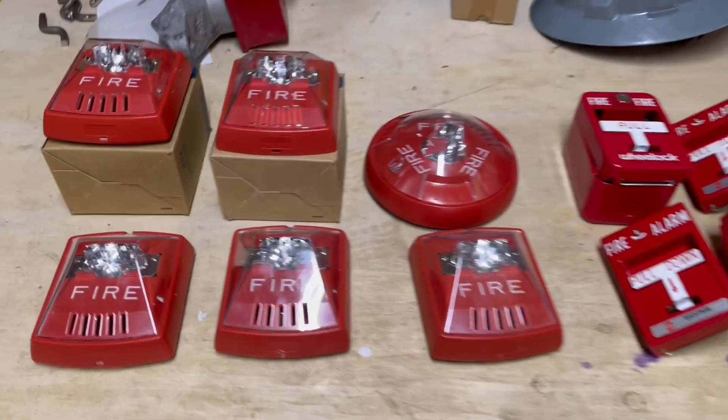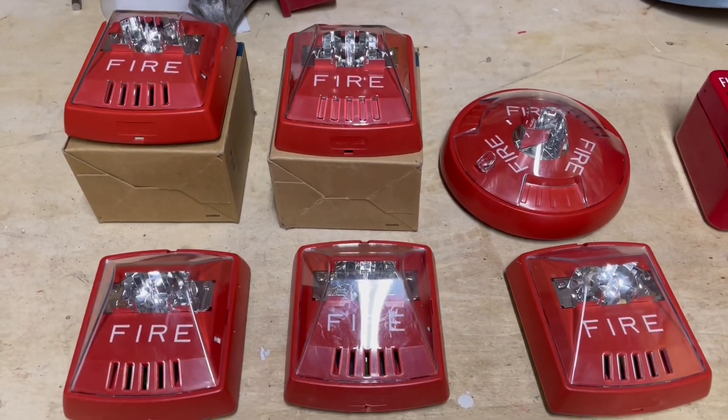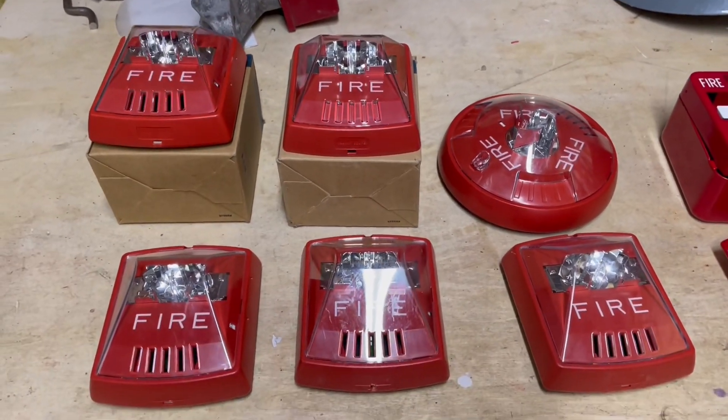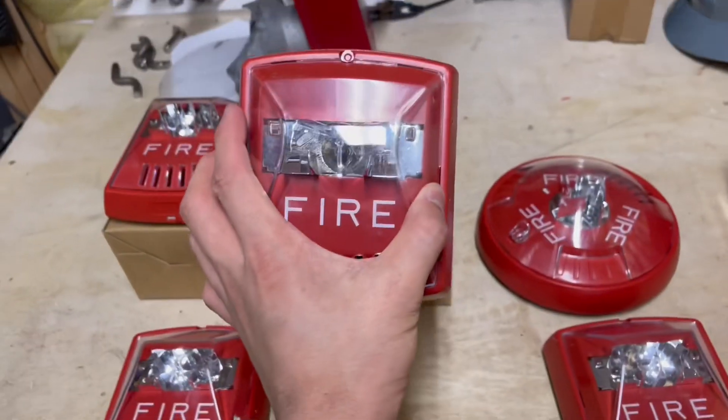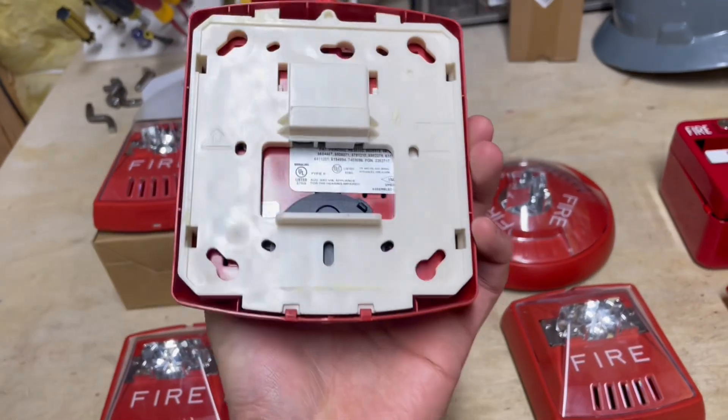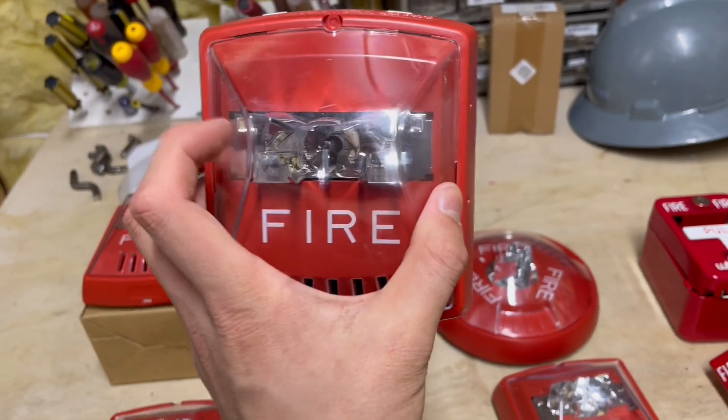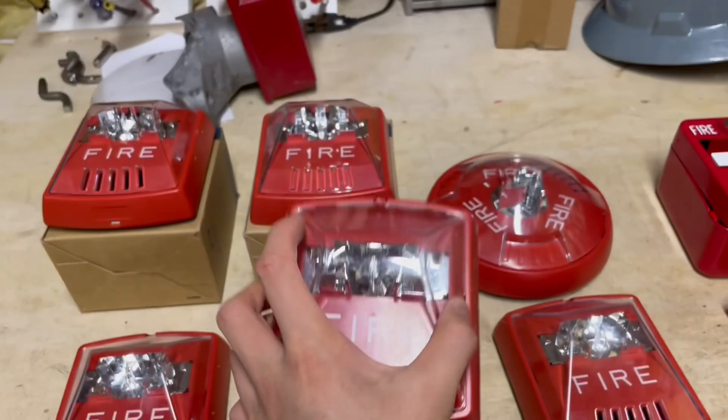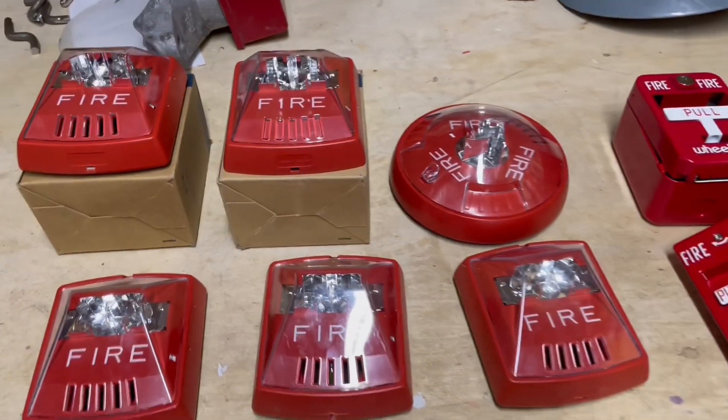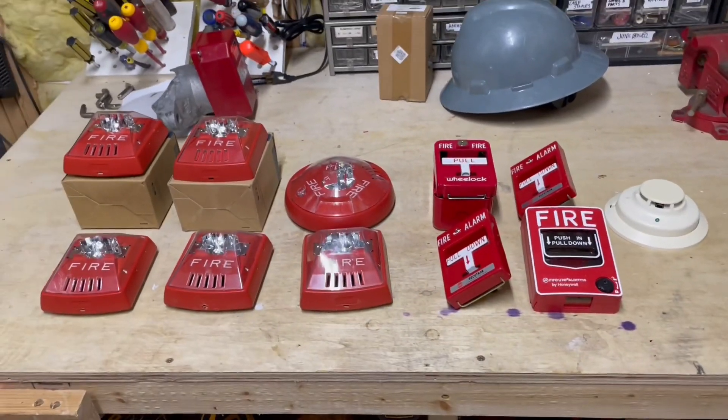Here's what we're putting in today. I have these Wheelock Exceder horn strobes and strobes. You can see these are pretty modern looking. They're actually pretty clean for today's standards and they are actually pretty new. These things aren't old at all. I think they were discontinued in 2022 or something like that, but they were discontinued in favor of the LED units. However, these are still really nice looking devices, so we're going to go ahead and put these up today.